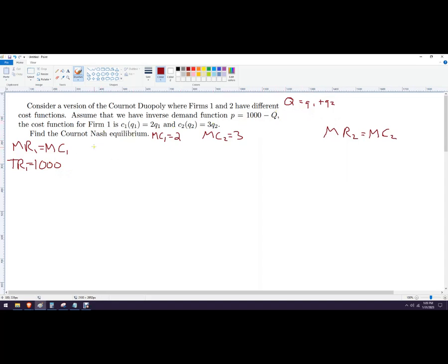What the inverse demand function really is, is it's going to be price equals 1,000 minus Q1 minus Q2. So that'll be important a little bit later on. So writing it that way,